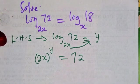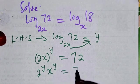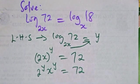From there we can see that we're going to have 2 to the power y times x to the power y equals 72.